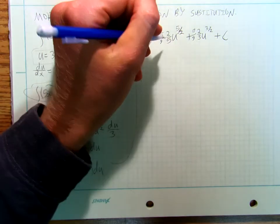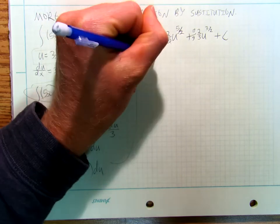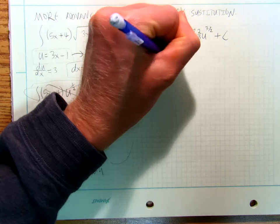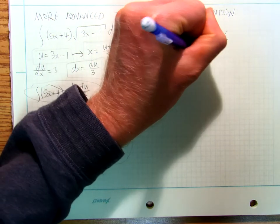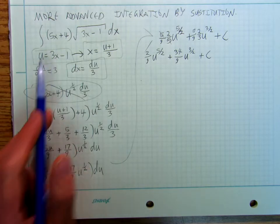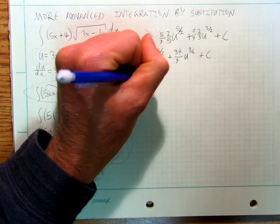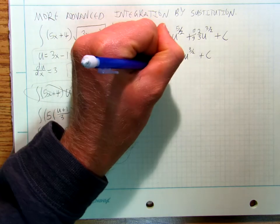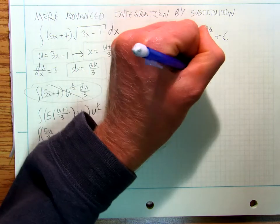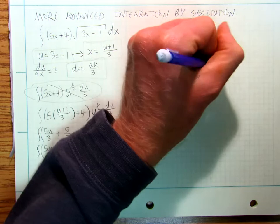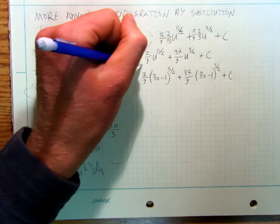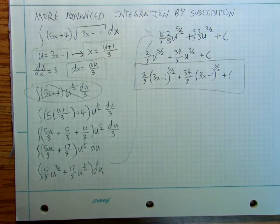So that's going to cancel, giving me two ninths u to the five halves, plus thirty-four ninths u to the three halves, plus C. And then I just remember that my u is three x minus one. So I've got two ninths times (three x minus one) to the five halves, plus thirty-four ninths times (three x minus one) to the three halves, plus C. And there's my answer to that.